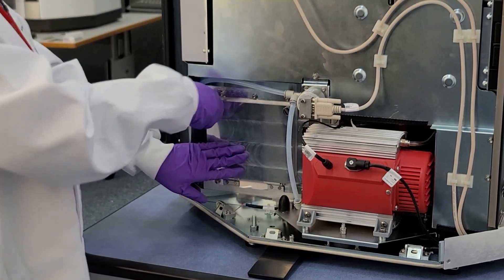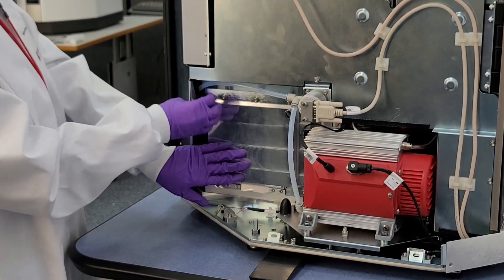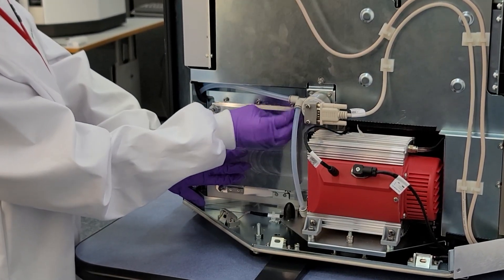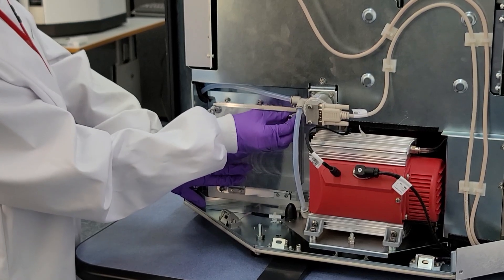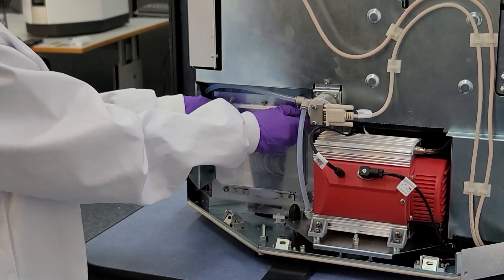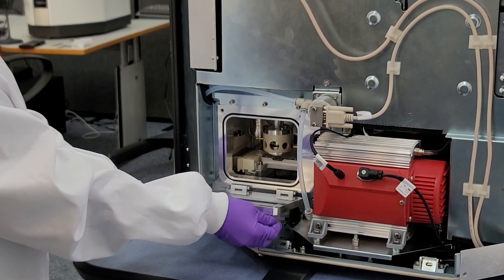Turn the two thumb screws anti-clockwise by hand until you feel each screw go very loose. Don't remove the thumb screws from the access panel. Gently lower the access panel until it rests on the stop.